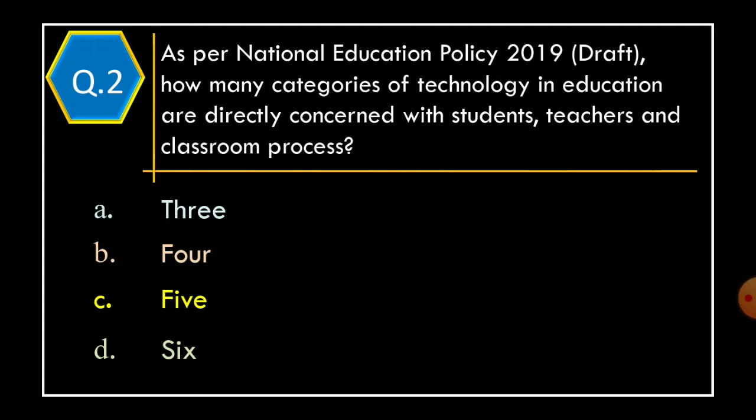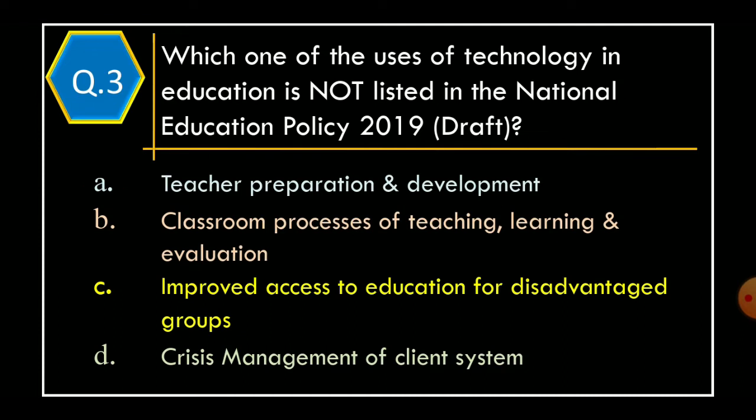Question 2. As per the National Education Policy 2019 draft, how many categories of technology in education are directly concerned with students, teachers, and classroom process? Option A: 3, Option B: 4, Option C: 5, Option D: 6. The correct option is Option A: 3.